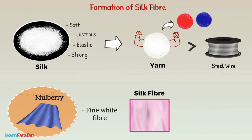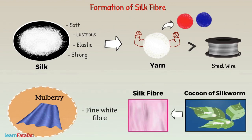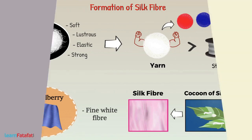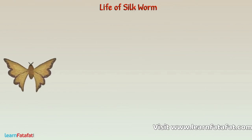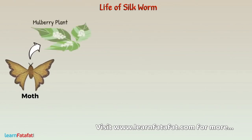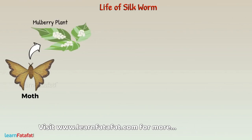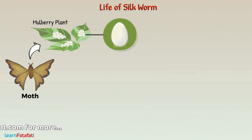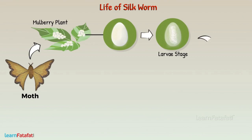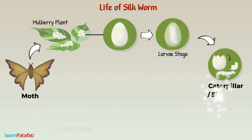Silk fibers are obtained from the cocoon of the silkworm. Let's understand the life of a silkworm and how a cocoon is formed. A female silk moth lays hundreds of eggs at a time. When the young organism growing in the egg reaches the larva stage, it comes out of the egg. The organism is then known as a caterpillar, or silkworm.